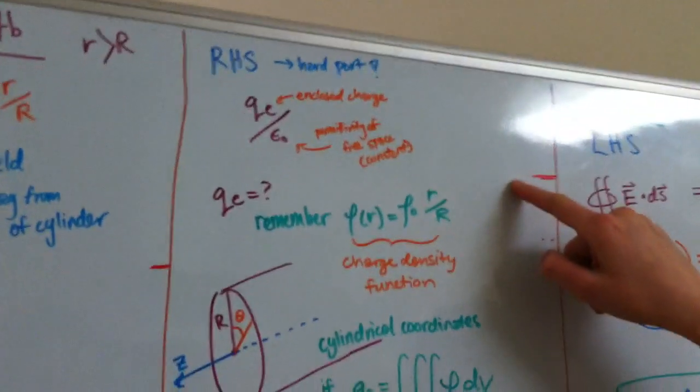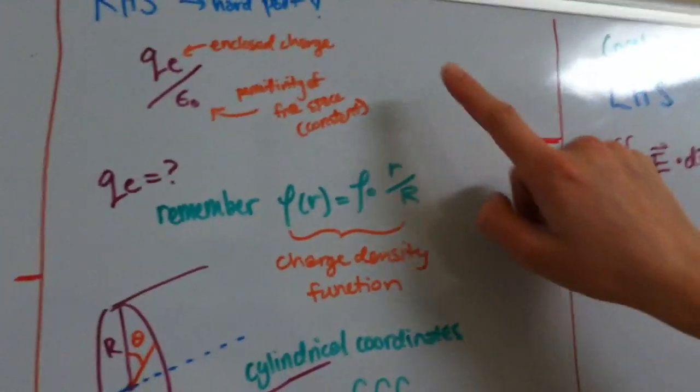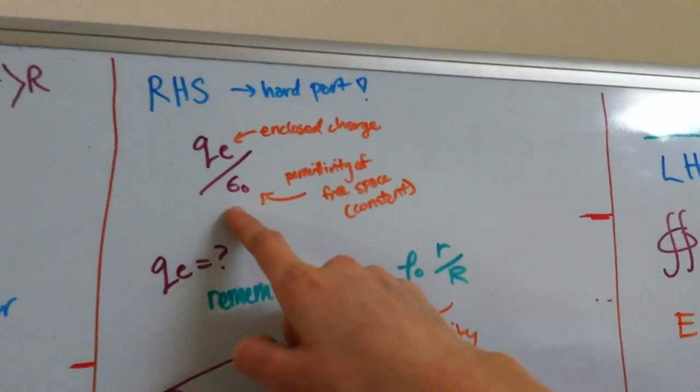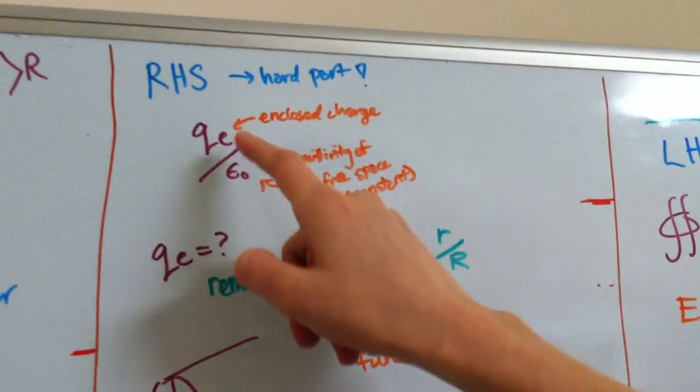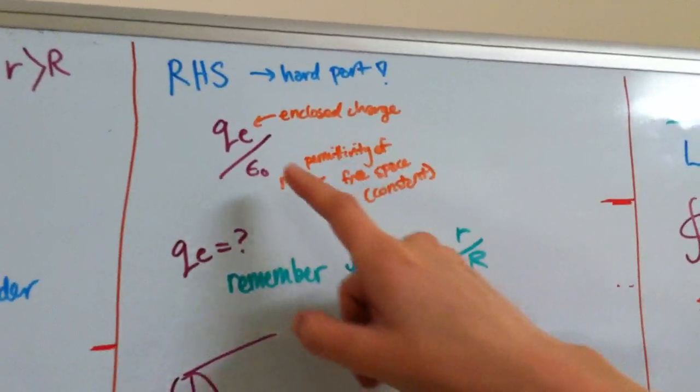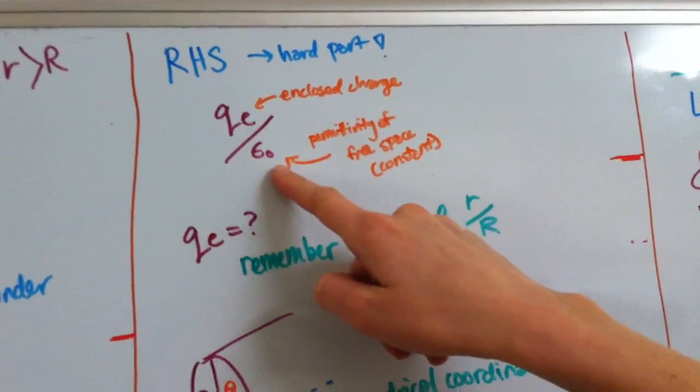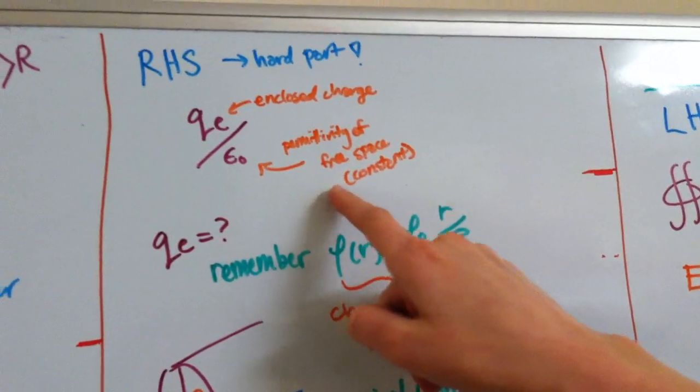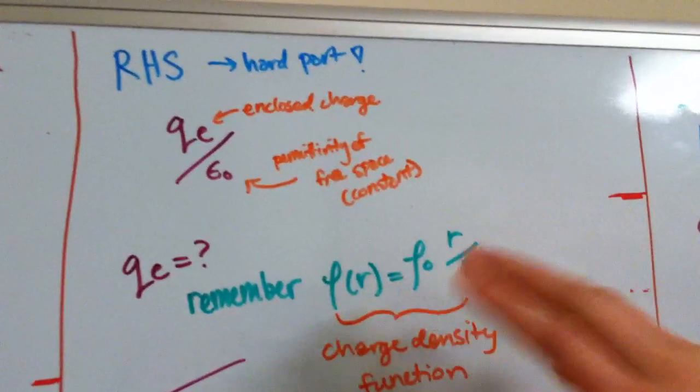Okay, so now for the hard part, the right-hand side, we have QE over epsilon naught. QE is the enclosed charge inside of our Gaussian surface, and epsilon naught is the permittivity of free space, which is a constant, don't worry about it, you can look it up.